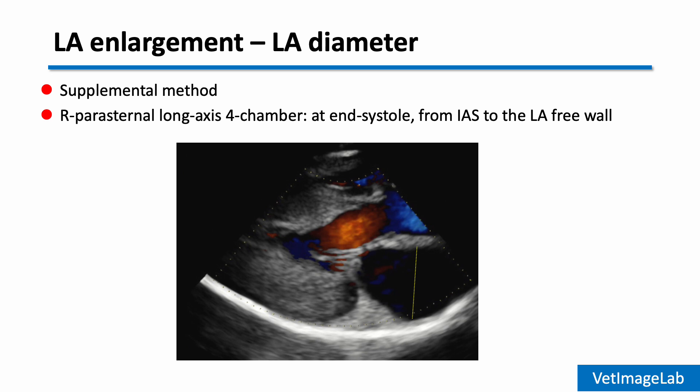This is typically done on a right parasternal long axis four-chamber view by measuring from the interatrial septum to the left atrium free wall at end systole when the left atrium is maximally distended. This absolute value can be helpful, especially when the aortic root is not well visualized, or when the LA to AO ratio might be unreliable due to image quality or anatomy.